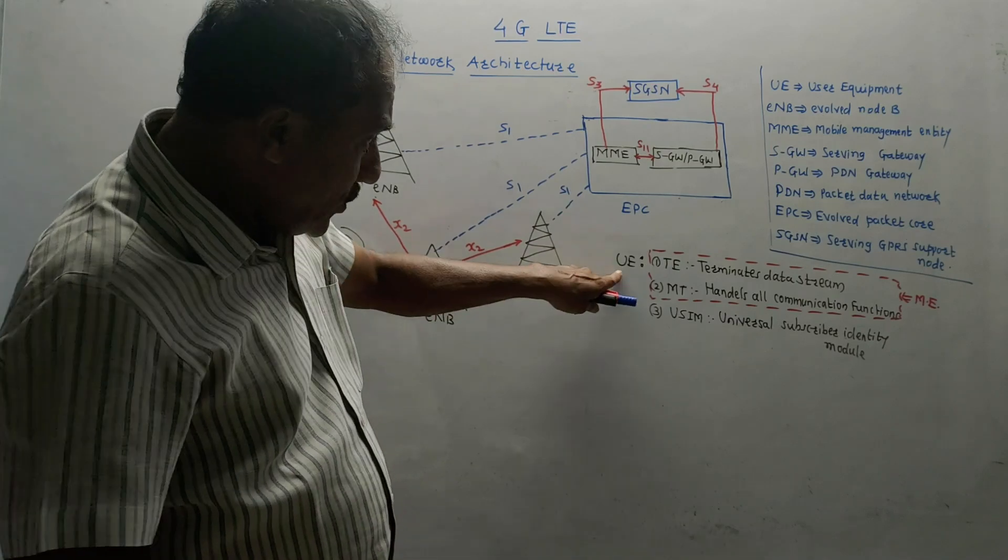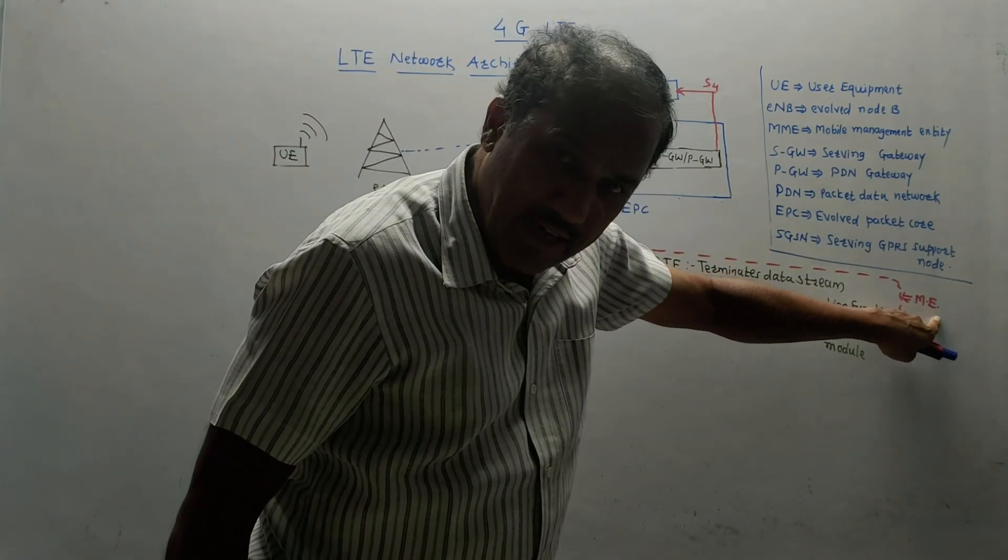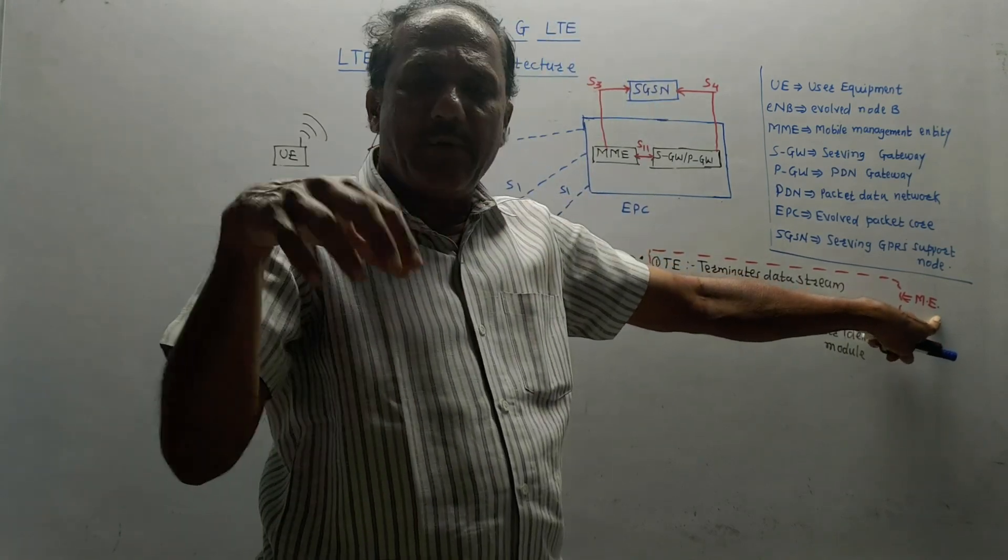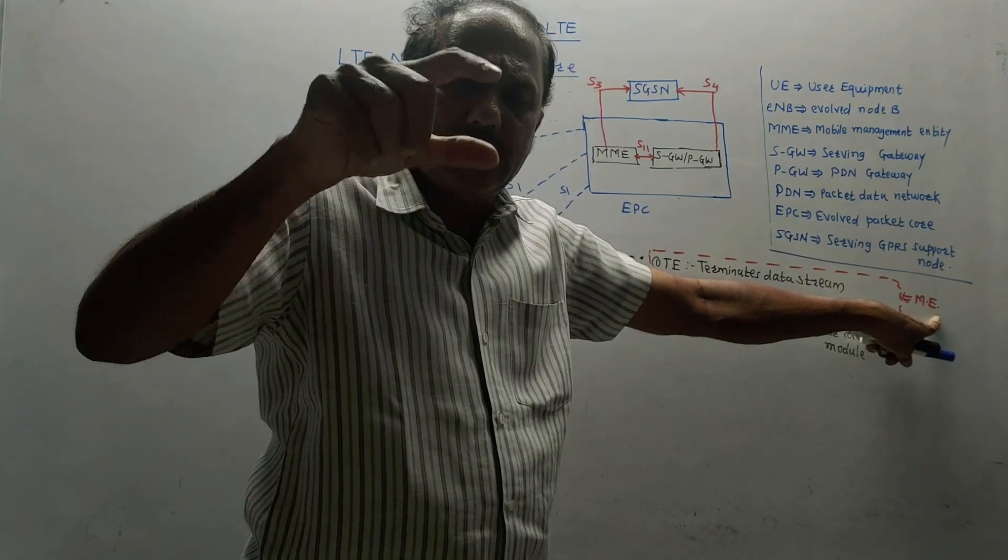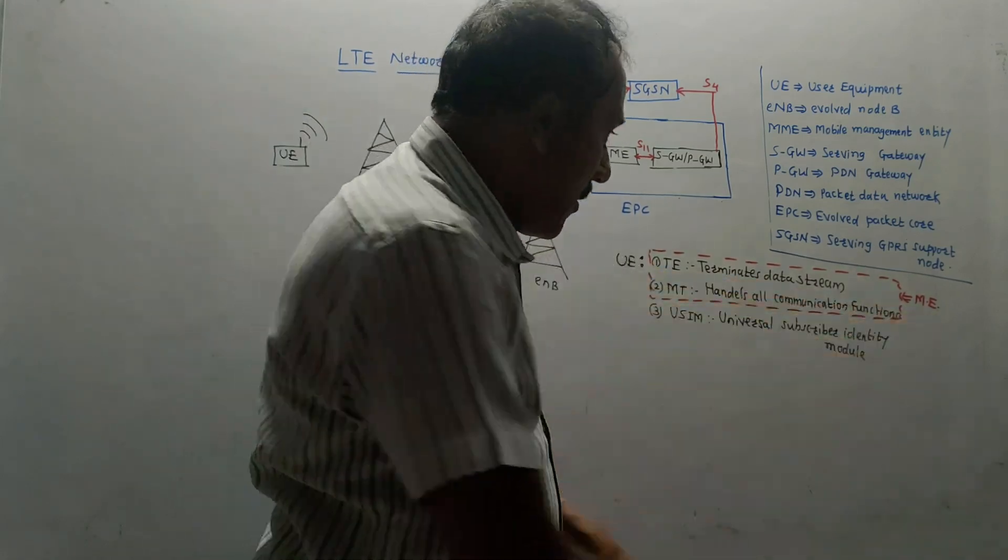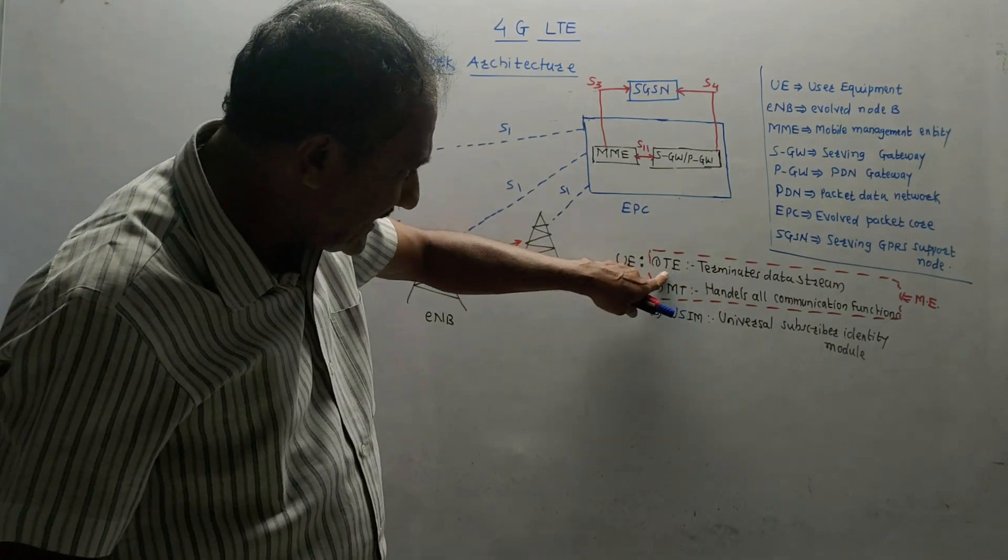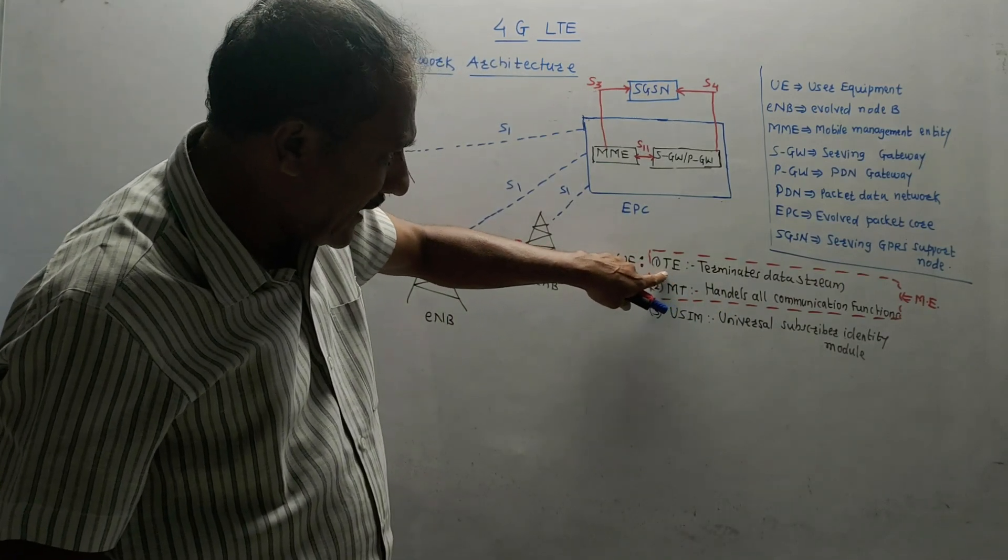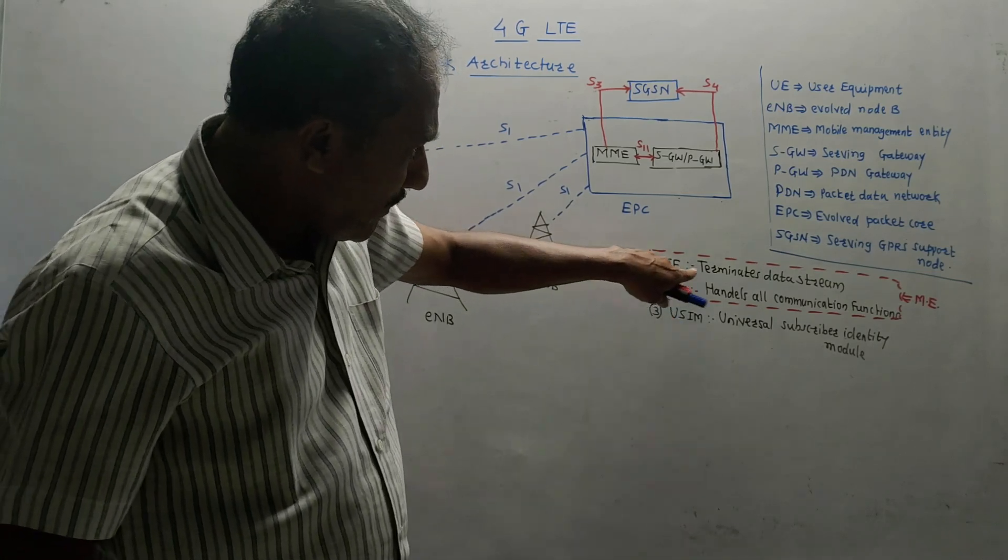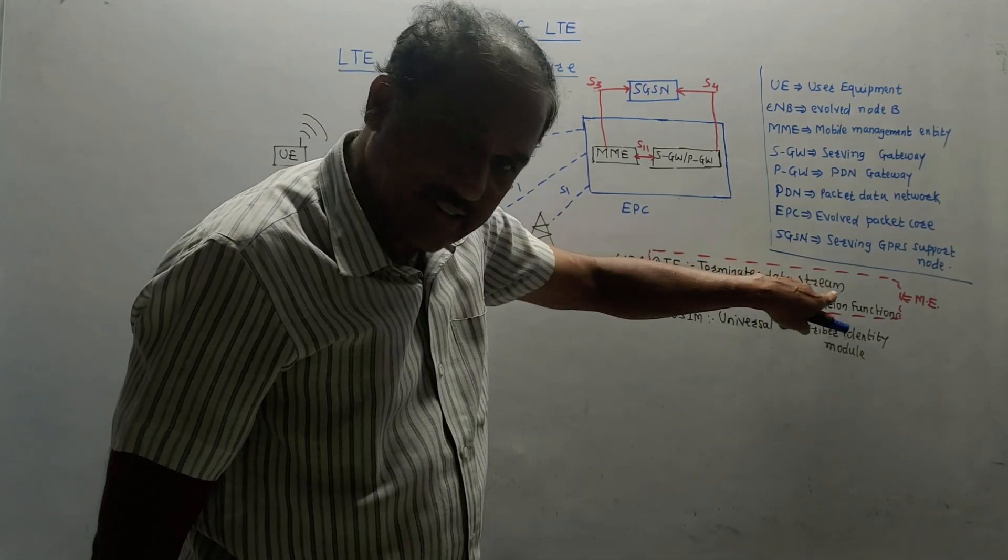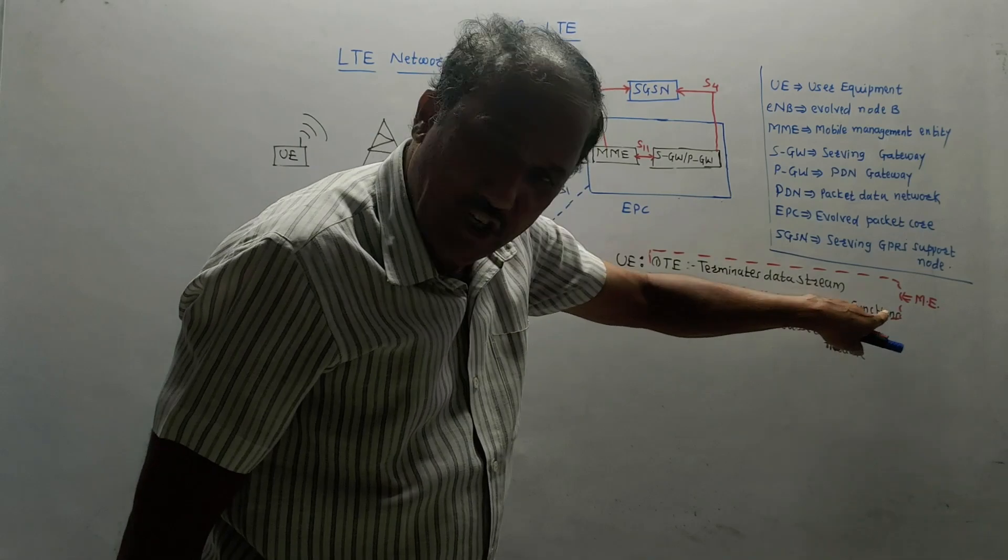In case of UE, that is user equipment, the first part is ME, that is mobile equipment. Mobile equipment we call in simple language handset, which is the main part creating the communication. Mobile equipment has two sub-parts: first is terminal equipment and second is mobile termination. Terminal equipment terminates the data stream. MT handles all communication functions.